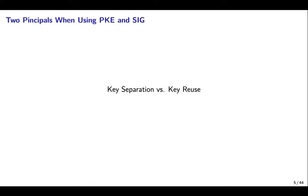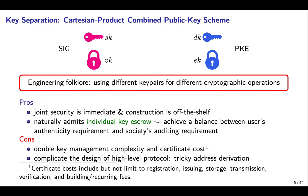There are two principles when using PKE and Signature together. The key separation principle is best illustrated by the Cartesian Product Combined Public Key Scheme, namely Signature and Public Key Encryption using independent key pairs. This is also a widely accepted engineering folklore: using different key pairs for different cryptographic operations. The advantage of key separation is that joint security is immediate, the construction is off-the-shelf, and it naturally admits individual key escrow, which is a vital property helping to achieve a balance between user's authenticity requirement and society's auditing requirement. The disadvantage is that it doubles key management complexity and certificate costs, and makes the design of high-level protocols more sophisticated.